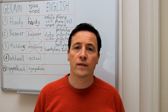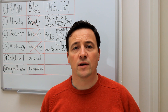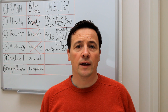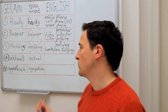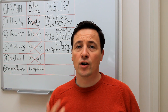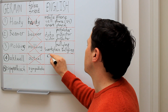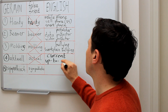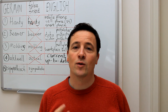A fourth very typical false friend that German speakers sometimes use is the German word 'aktuell'. In English, the word is not 'actual' — the correct words are 'current' or 'up to date'.